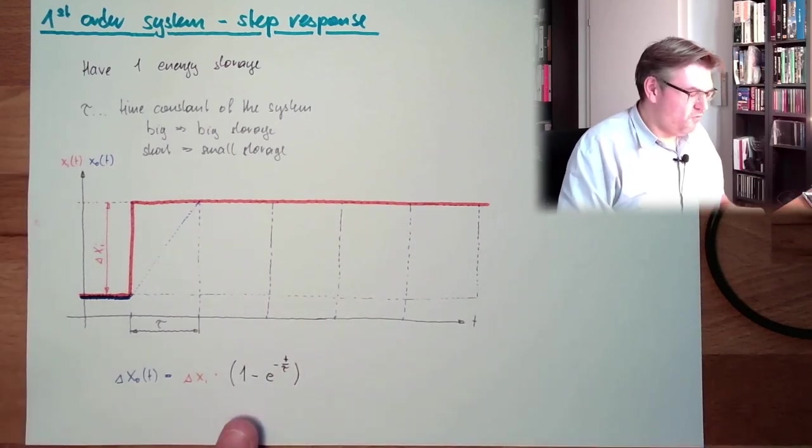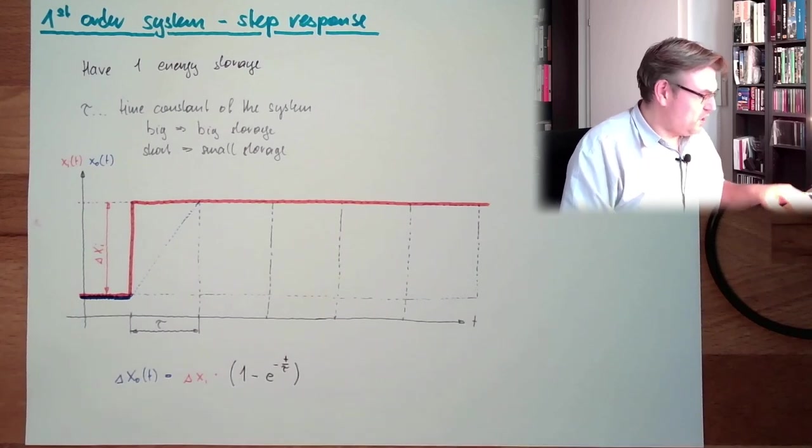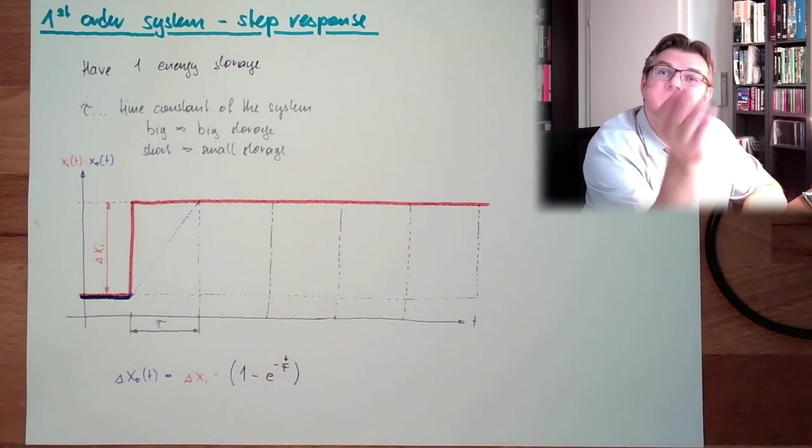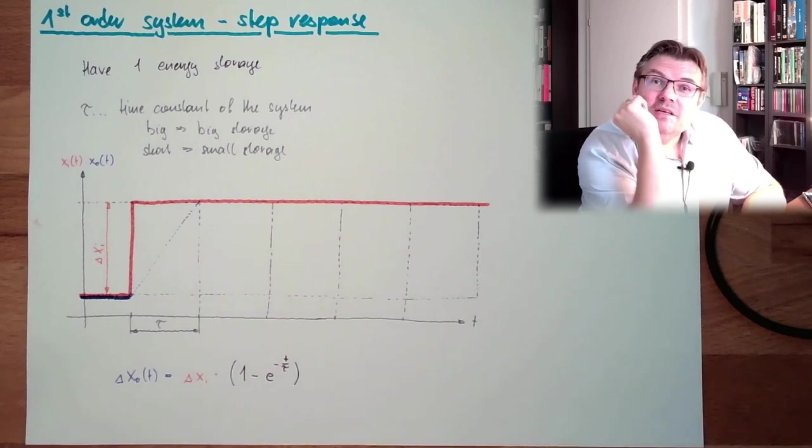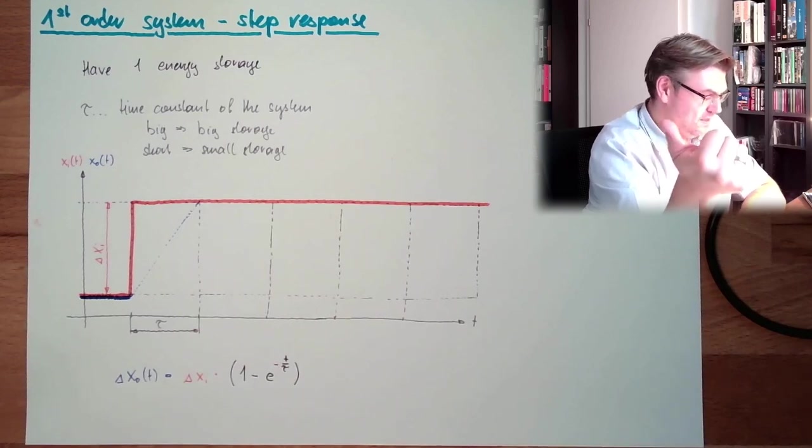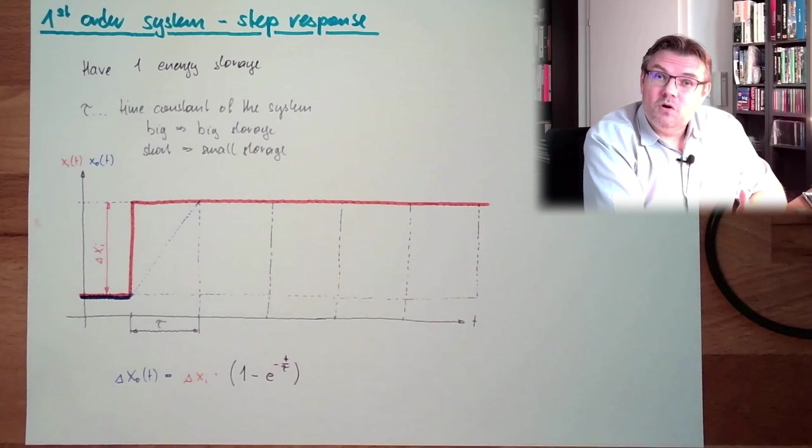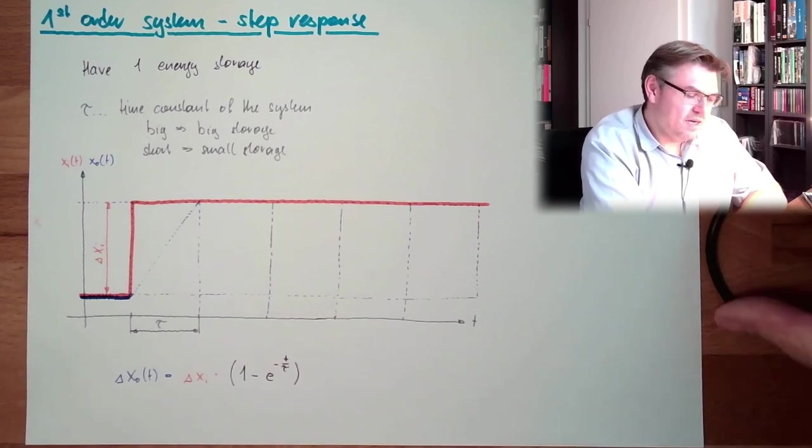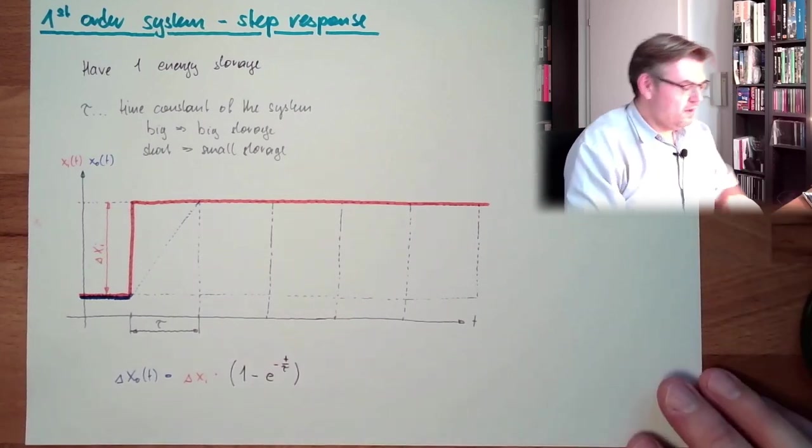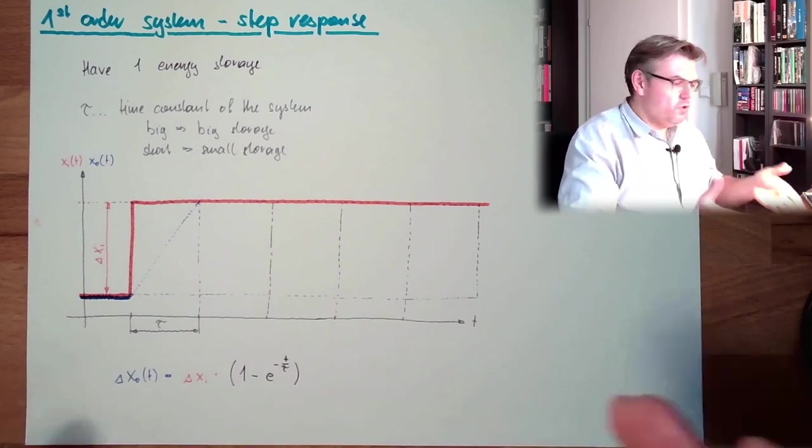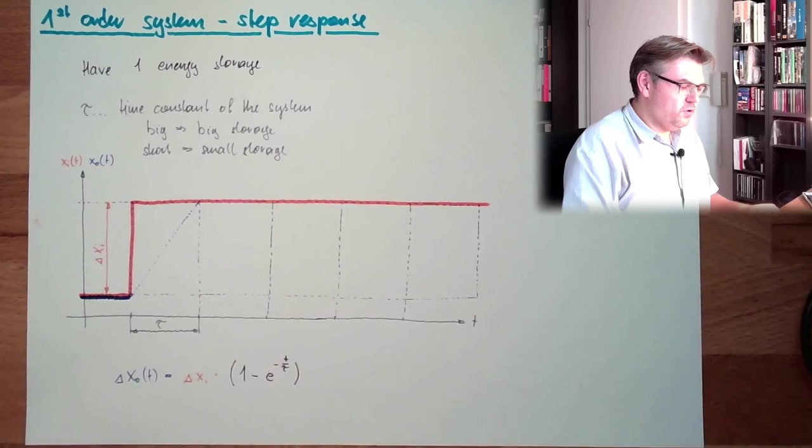You probably know this formula from the charge or discharge of a capacitor. And it's no wonder that it is that case, because if you charge, how many energy storage has a capacitor? One, the capacitor. And this tau is determined, we also call the time constant there, with the charging or discharging resistor and the capacity and the size of the capacitor. So actually, charging and discharging a capacitor is a first-order delay system.